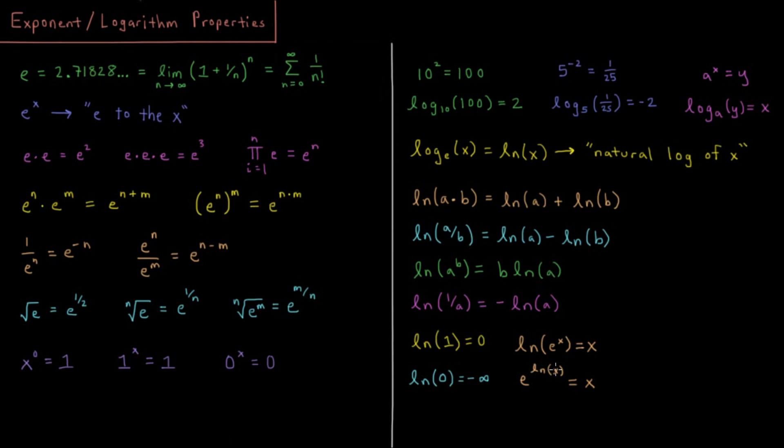So e to the natural log of x, similarly, is going to cancel out those inverse operations, and you're going to get x as well. And then lastly, the natural log of 0, or the logarithm of any base of 0, is going to equal negative infinity, not giving us a finite number that we can use. So typically, we're going to be considering logarithms with positive arguments. If you use a negative argument, then you're going to be getting into some weird complex values. So for the most part, make sure that whatever argument you're putting into a log, that you're giving a positive or at least a non-negative value.